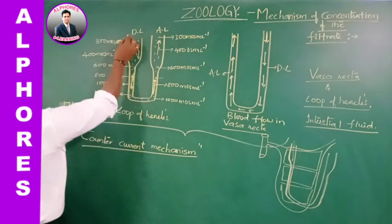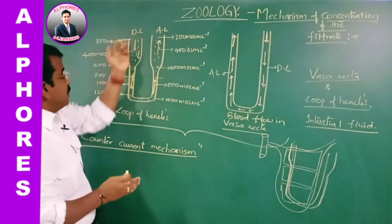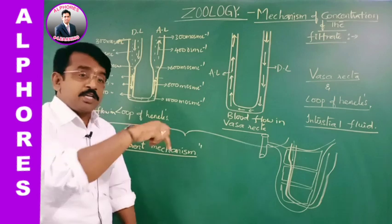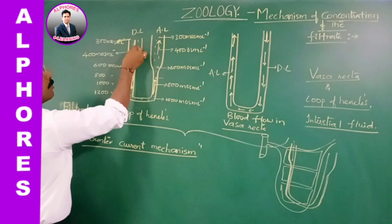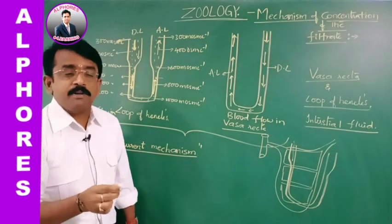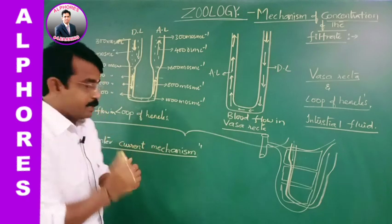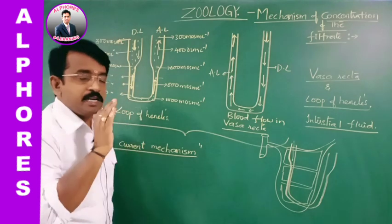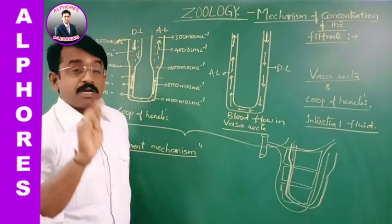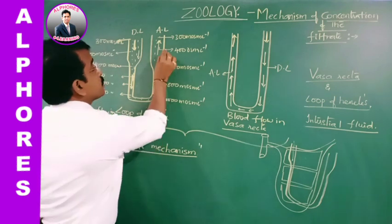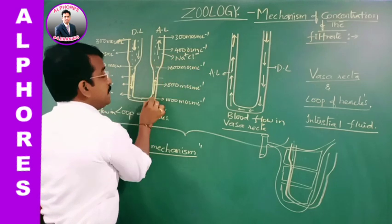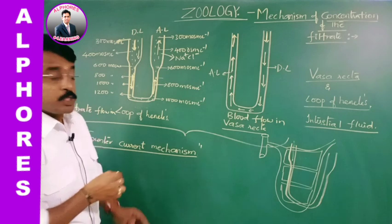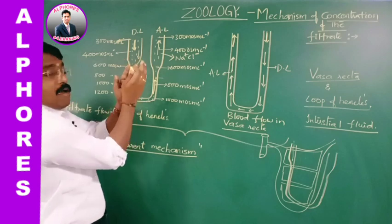From outer medulla to inner medulla, progressively the concentration in the descending limb increases. Why? Water reabsorption takes place, and additionally ions are added. So progressively from outer medulla to inner medulla in the descending limb of loop of Henle, concentration increases. It then takes the hairpin bend and forms the ascending limb, which includes thin and thick segments and is entirely impermeable for water but permeable for electrolytes. Large extent of sodium chloride from the ascending limb is reabsorbed into the interstitial fluid, so progressively water remains in the ascending limb but ions are reabsorbed.